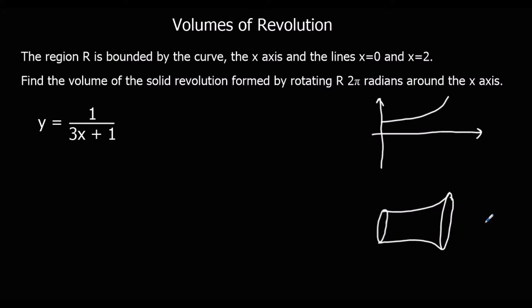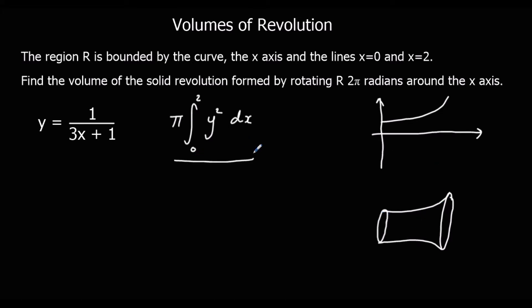We can work out the volume of this 3D shape by doing π times the integral of y squared with respect to x, between the two limits we're given — in this case between 0 and 2. It's a bit like πr² for the area of a circle, but it's made up of a lot of little circles all pushed together to make a 3D shape. So to find the volume of a solid generated by spinning part of a curve around the x-axis 360 degrees, we do π times the integral of y squared with respect to x between the limits.